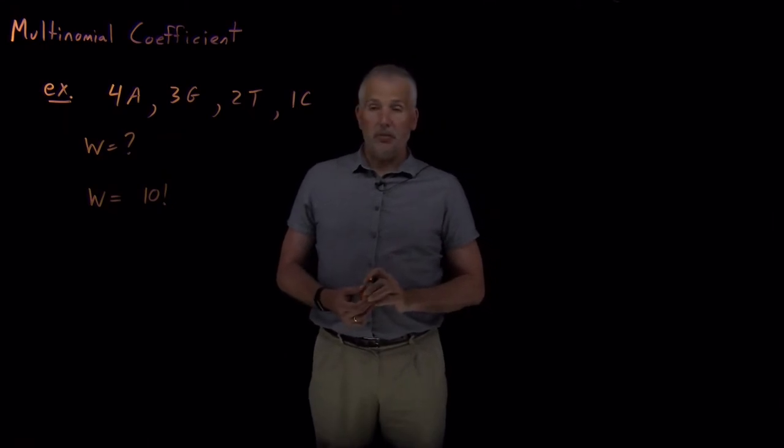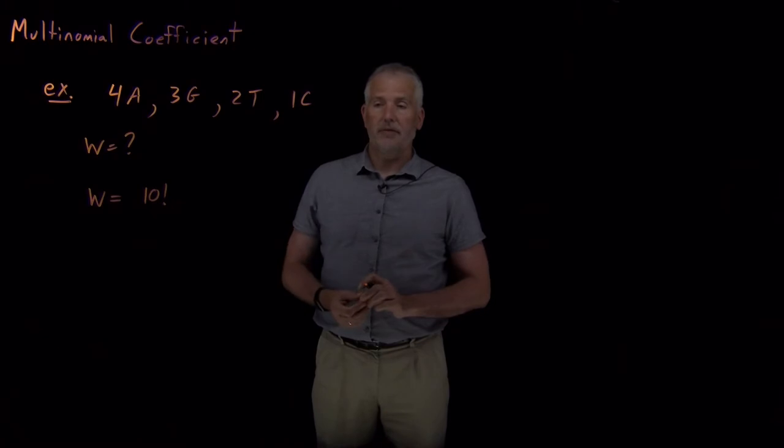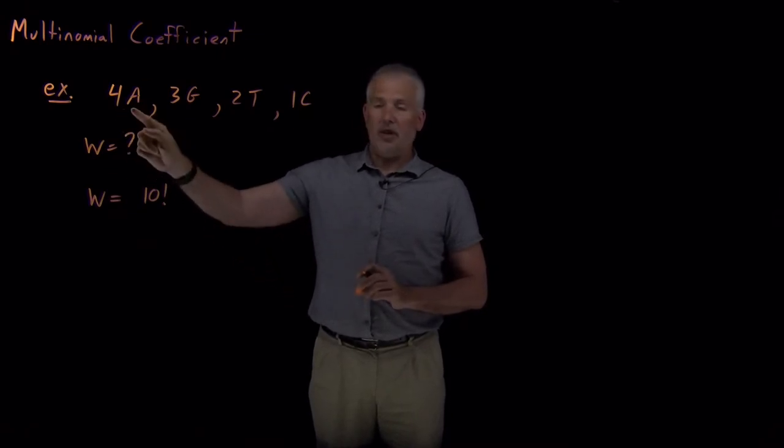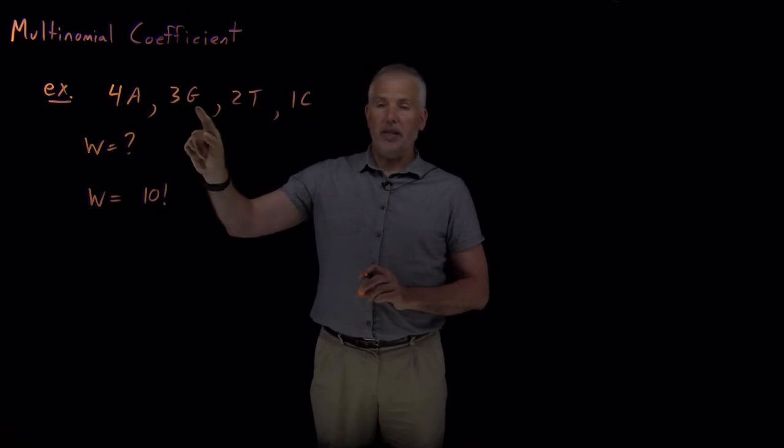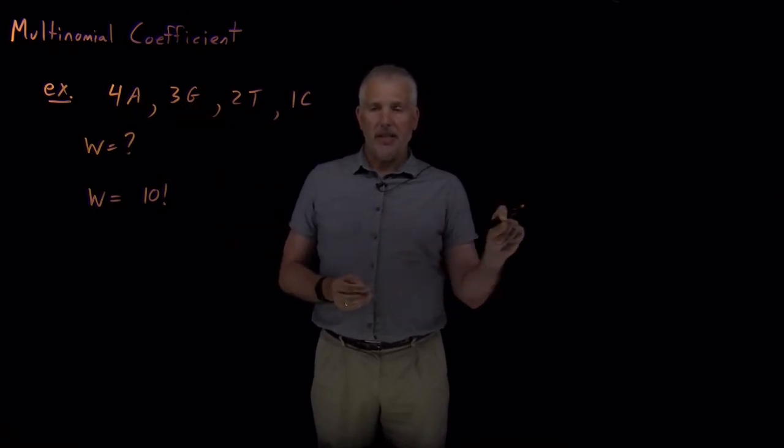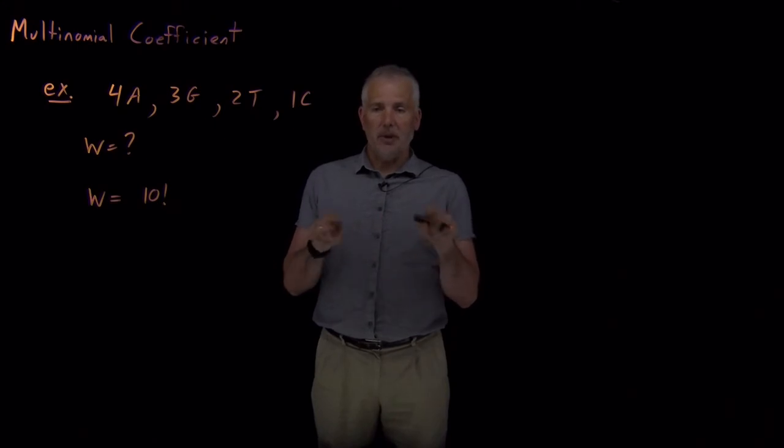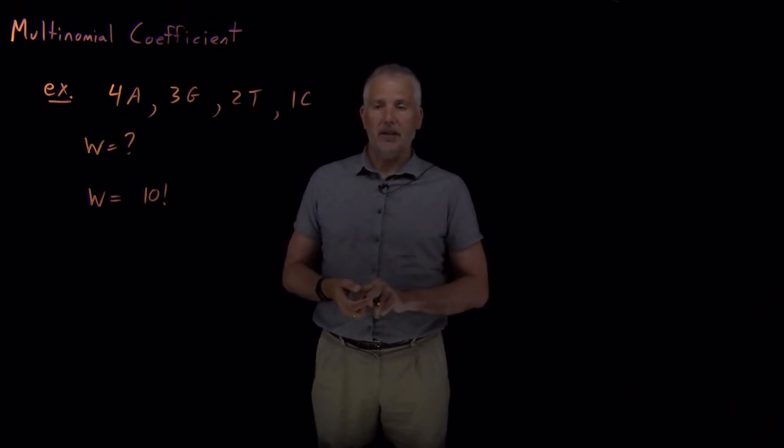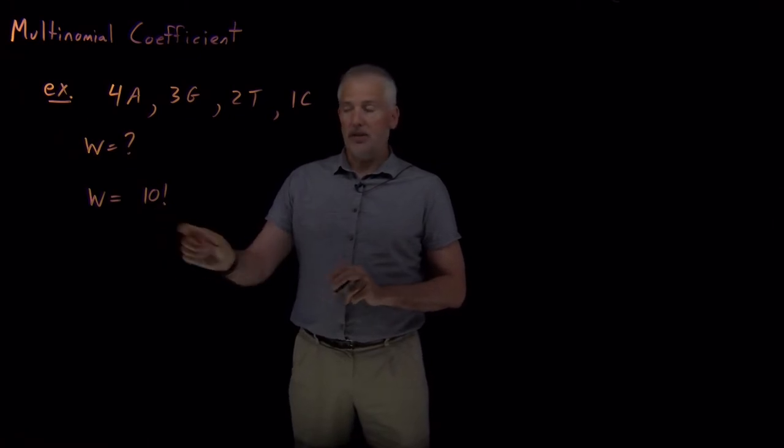If they are distinguishable, if every individual monomer was different from all the others, then I could arrange them in 10 factorial different ways. That's what a permutation is for, calculating the number of arrangements of distinguishable objects. But these adenines are indistinguishable from one another. The three guanines are indistinguishable from one another. So there's a lot of ways of writing down A's and G's and T's and C's that are the same because I can mix and match the A's. So 10 factorial is not the right answer.